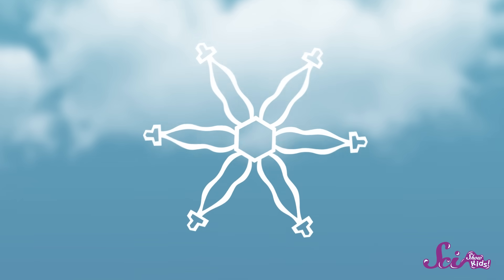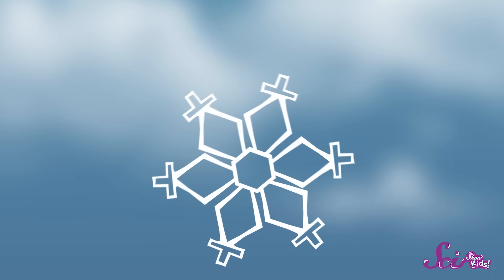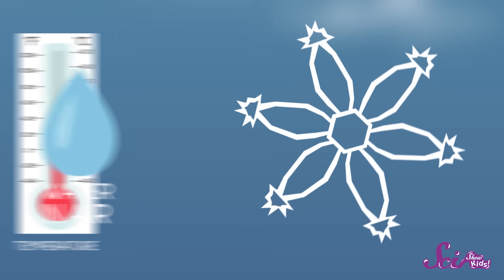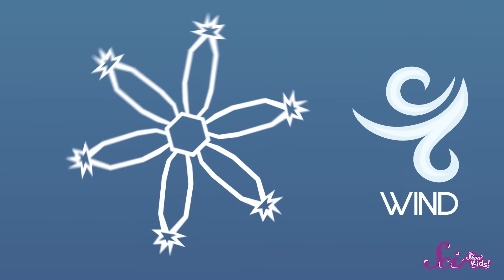Once a snowflake takes shape, its journey has only just begun. After bouncing around in the cloud for a while, it falls to the ground. And as it falls, it keeps changing, depending on the temperature, the amount of water in the air, and other things like wind that it passes through.